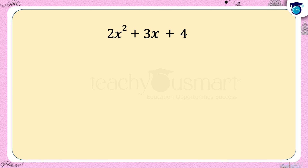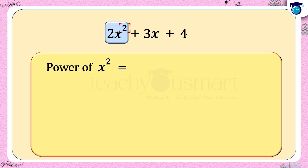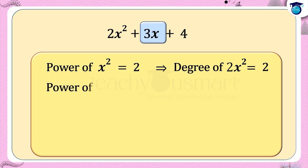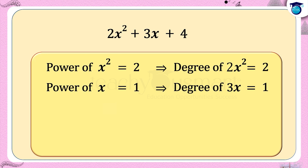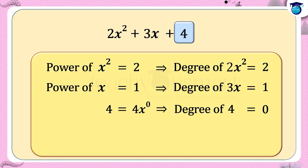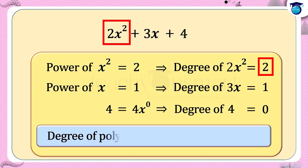In 2x² + 3x + 4, the first term is 2x², with power of x equal to 2, so the degree of 2x² is 2. The second term is 3x, with power of x equal to 1, so the degree of 3x is 1. The third term is 4, which equals 4x⁰, so the degree of 4 is 0. The highest degree term is 2x², and the degree of that term is 2.